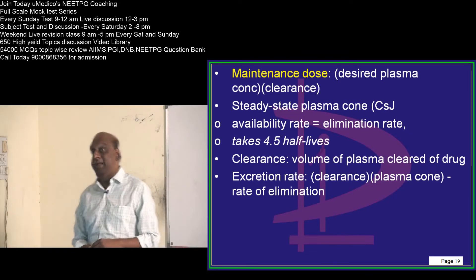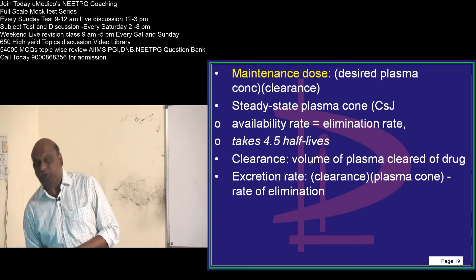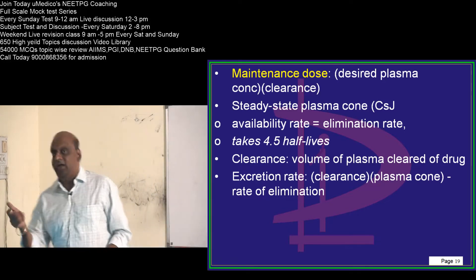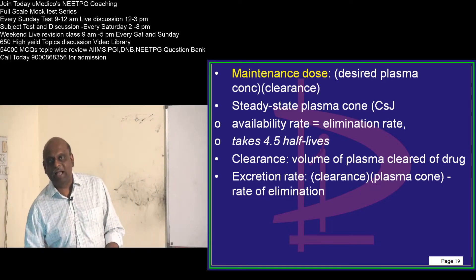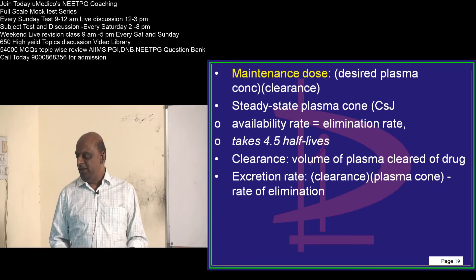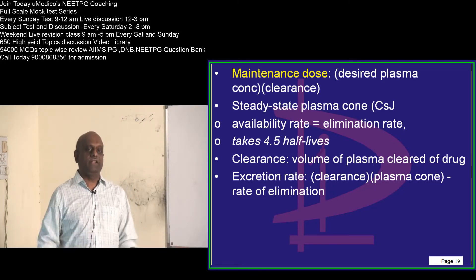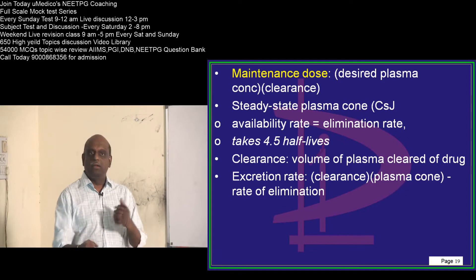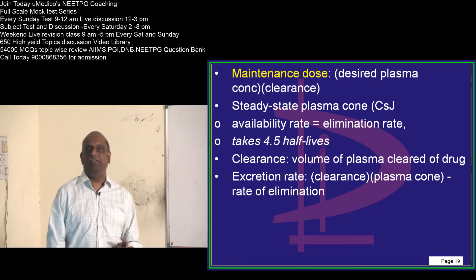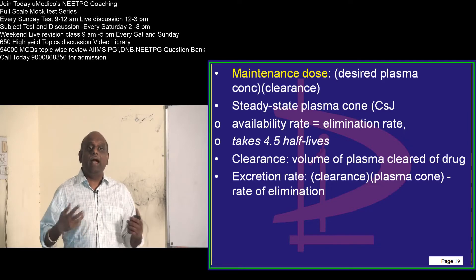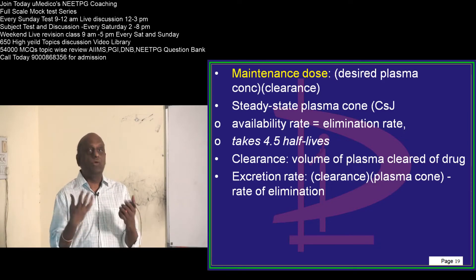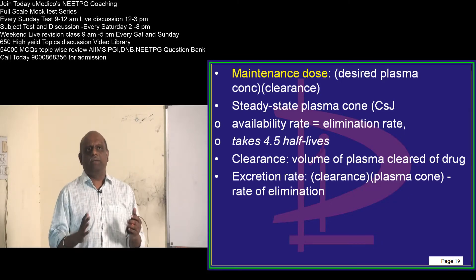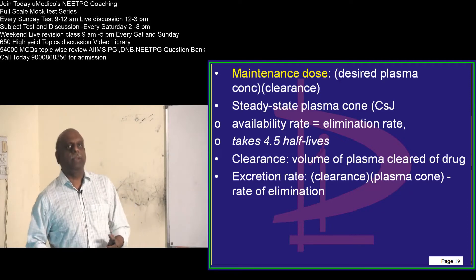Now let us talk about the maintenance dose. The maintenance dose is calculated as desired plasma concentration multiplied by clearance. When do you call it steady-state concentration? The point where the elimination rate of the drug and the availability rate become equal is called the steady-state plasma concentration.